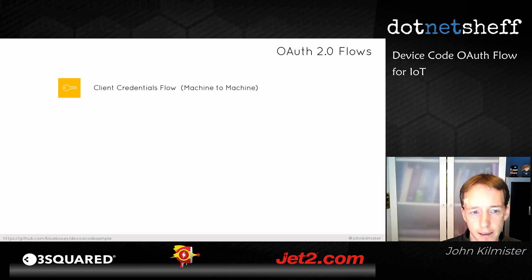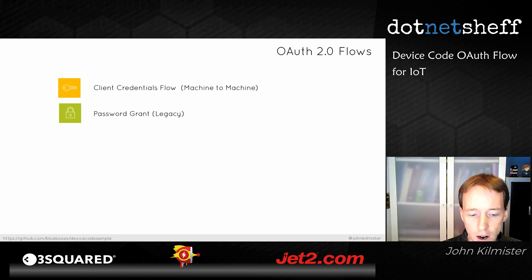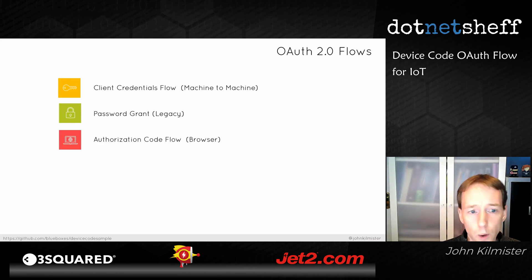We could look at password grant flow, which allows you to get a token by passing across a username and password, but it kind of defeats the point of what we're trying to do. That's why it's been marked as legacy — as an application we don't want to be handling usernames and passwords for other systems, so we want to avoid password grant.